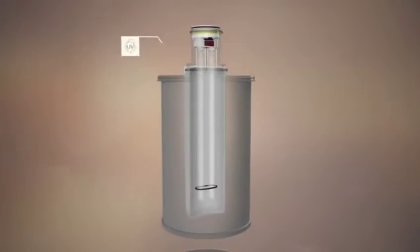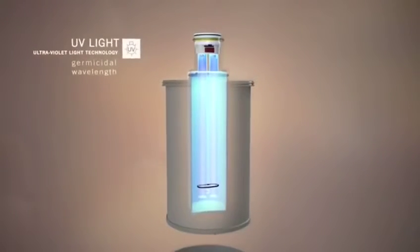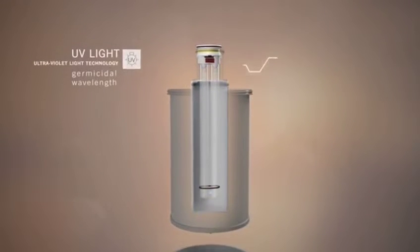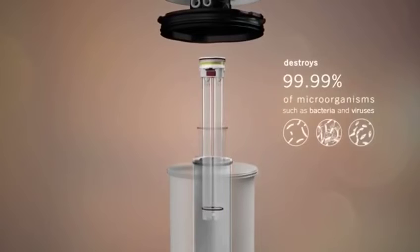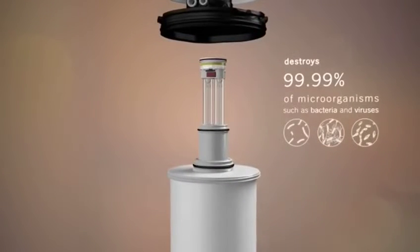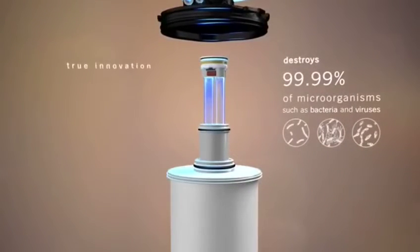We've added a second level of protection: ultraviolet light, which does what carbon cannot do alone. It destroys microorganisms like bacteria and viruses that can enter water supplies and impact your health. The UV light turns on instantly only when water is flowing, making it energy efficient and delivering clean disinfected water.